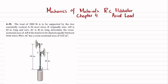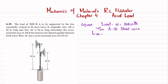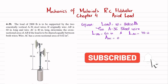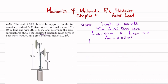Let's start with the given data. Load W = 2800 pounds, two A36 steel wires. Length of wire AB is 60 inches, length of wire AC is 40 inches. Cross-sectional area of AC is equal to 0.02 square inches. It is given that the load is to be shared equally.